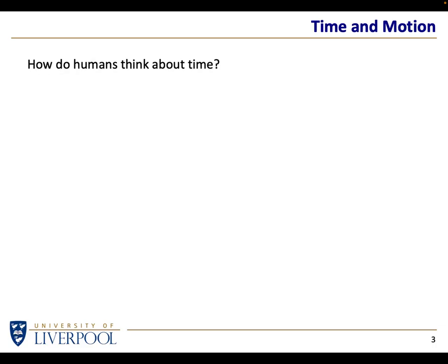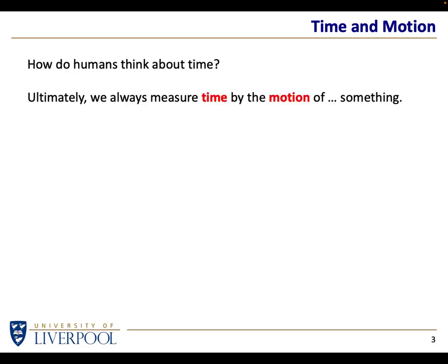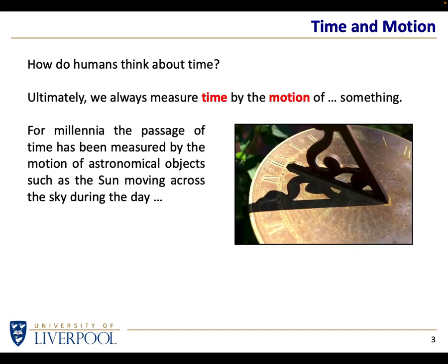With humans, time is always the result of thinking about motion — we can't think of it any other way. We see something move and use that movement to judge the passage of time; that's essentially the only way we can judge it. For millennia, this has been done by astronomical means — for instance, looking at the passage of the Sun. Regardless of the fact that it's the Earth that moves, we see the Sun apparently move in the sky, and we can look at the shadow on a sundial to judge the time of day.